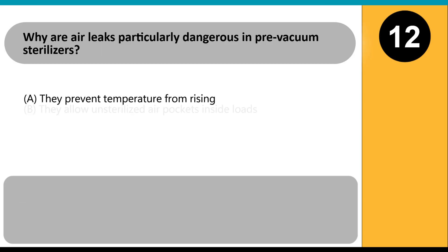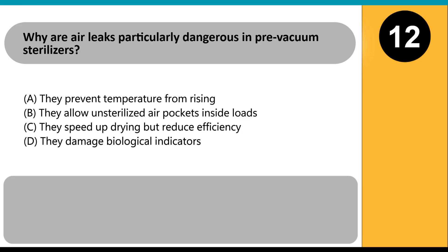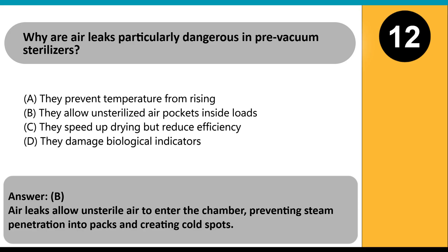Why are air leaks particularly dangerous in pre-vacuum sterilizers? A. They prevent temperature from rising. B. They allow unsterilized air pockets inside loads. C. They speed up drying but reduce efficiency. D. They damage biological indicators. Answer: B. Air leaks allow unsterile air to enter the chamber, preventing steam penetration into packs and creating cold spots.